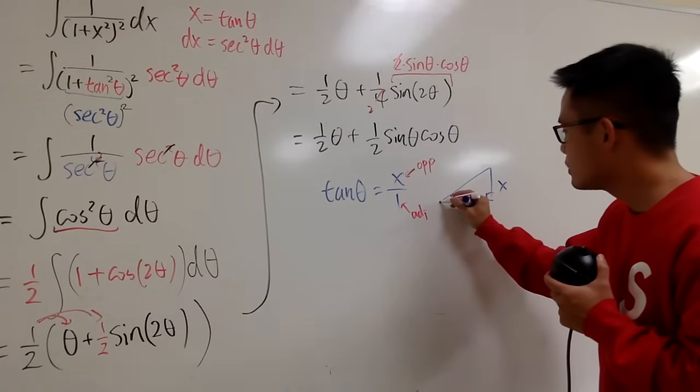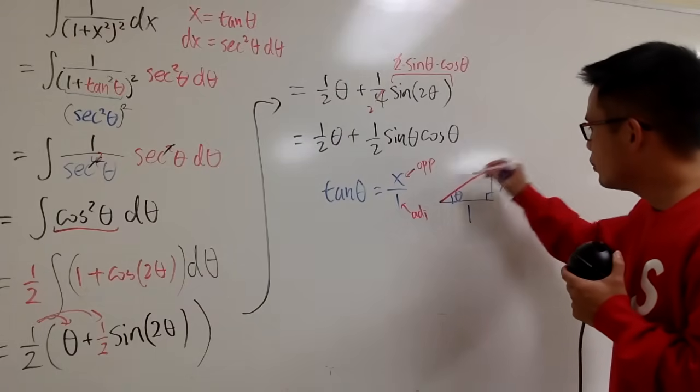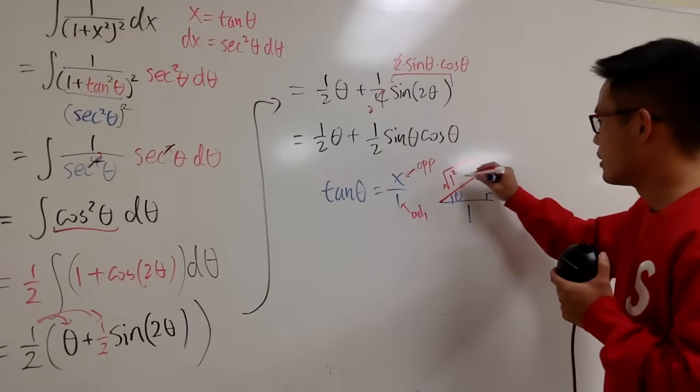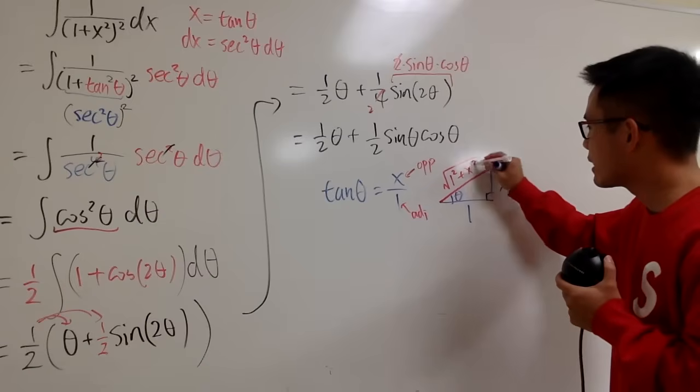And we also have to figure out the hypotenuse, which is this right here. And to do that, we first take the square root, and we just do 1 squared, which is this right here, plus x squared, like that.